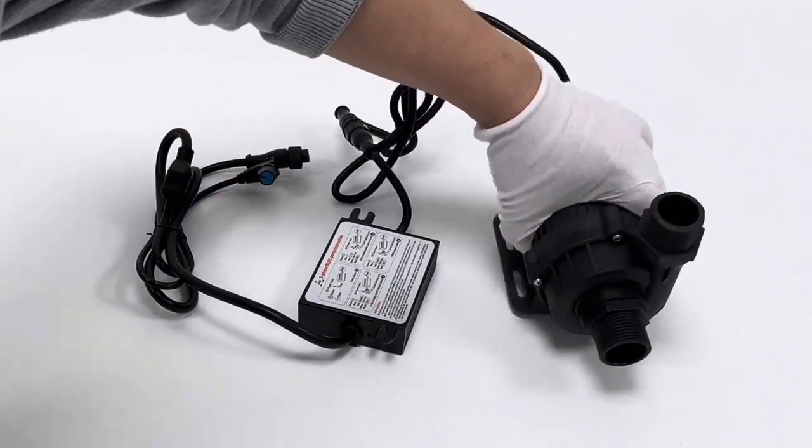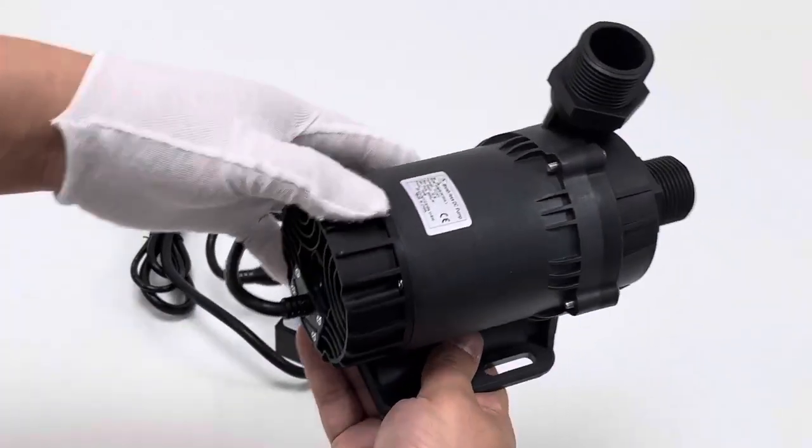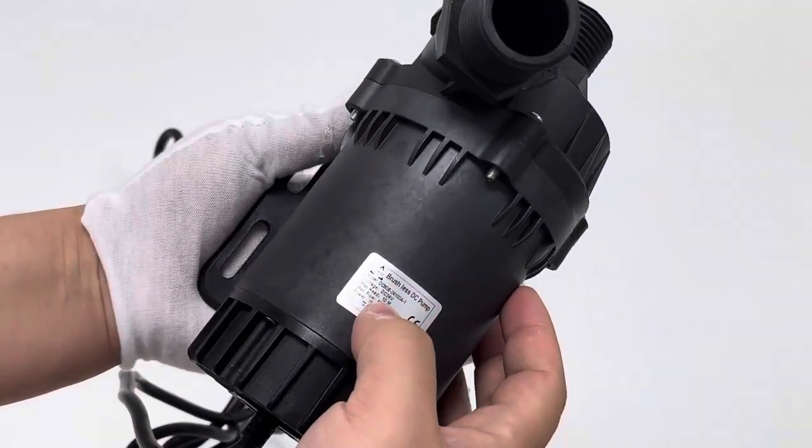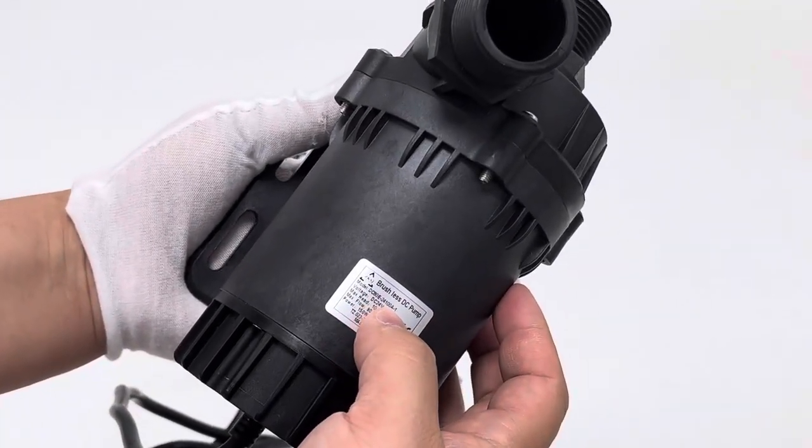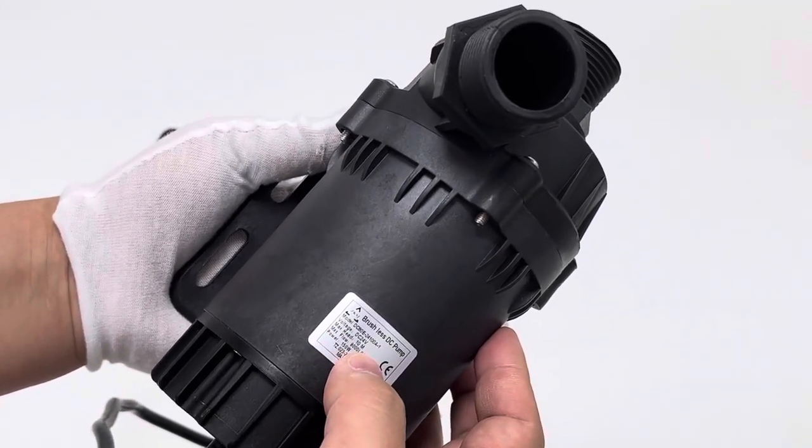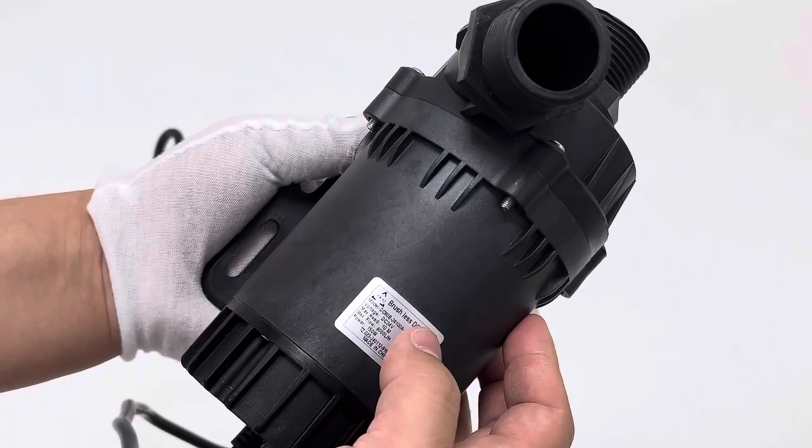Let's get this pump body closer to the camera so that we can take a closer look. DCDE2410A1 model. The max steady lift can be up to 10 meters, about 32 feet.